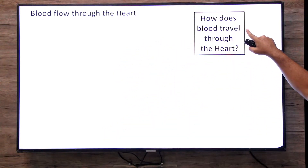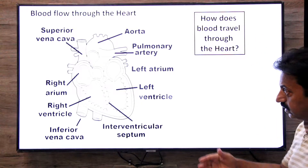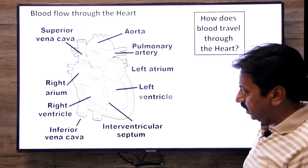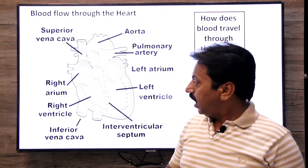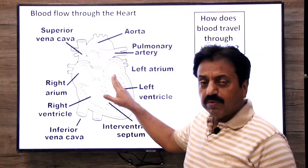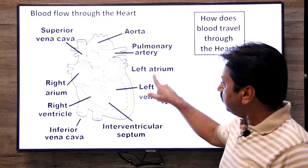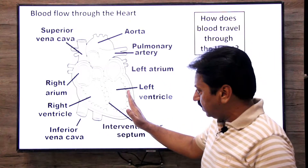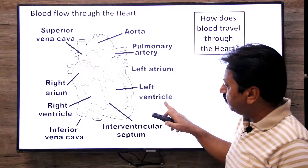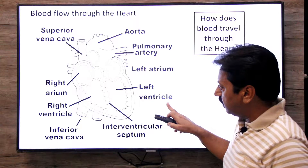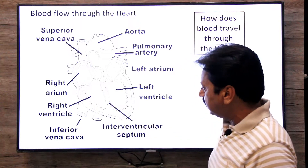How does blood flow through the heart? Our heart is four-chambered. The upper two chambers are smaller, known as atria — one is the right atrium and the other is the left atrium. The lower two chambers are larger and thick-walled, known as ventricles — one is the right ventricle and the other is the left ventricle. These four chambers are separated by a muscular wall called the septum.